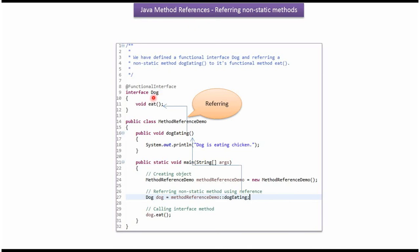Here I have defined the functional interface dog. It has eat method which is a functional method. Here I have defined the class MethodReferenceDemo. It has dogEating method which is a non-static method.